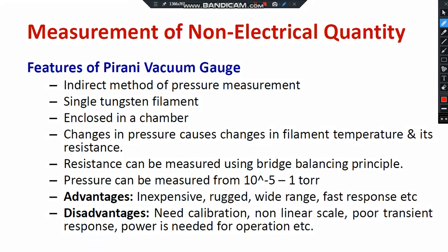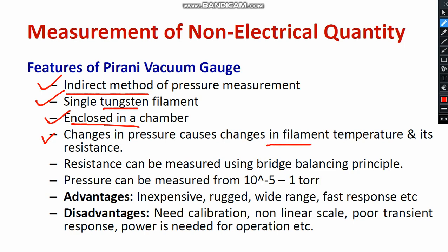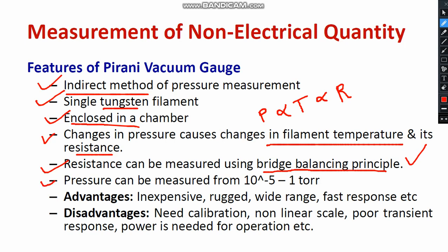The features of the Pirani type vacuum gauge are as follows. It is an indirect method of pressure measurement. The major element used is a tungsten filament, which has a high melting point of over 3000 degrees Celsius. The entire tungsten filament is enclosed in a glass chamber. Changes in pressure cause changes in filament temperature and its resistance. Resistance can be measured using a Wheatstone bridge with a bridge balancing principle. The pressure measurement range is 10 to the power of minus 5 to 1 torr.